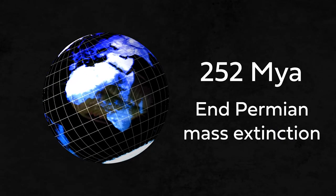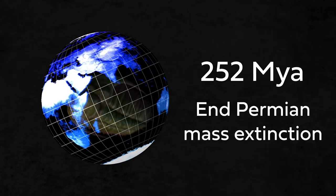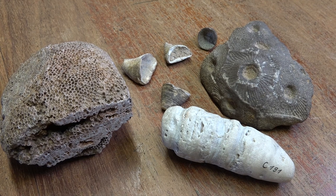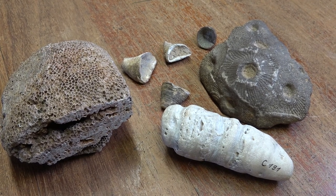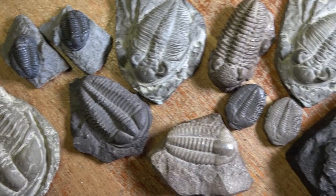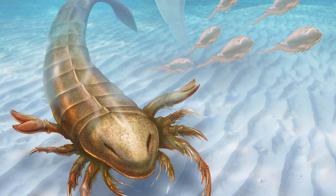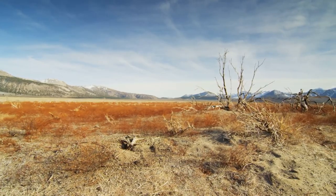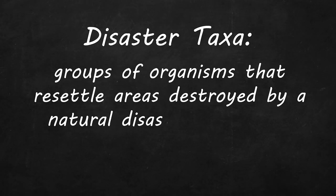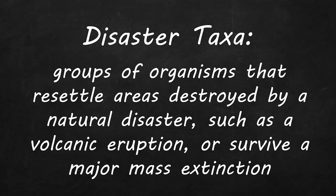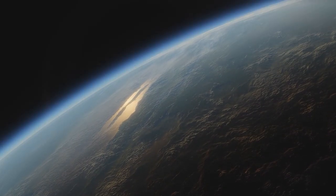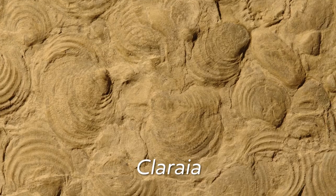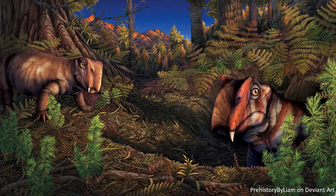Going back to the Permian-Triassic mass extinction, there were many casualties and whole groups of animals went extinct. Most notably, horn corals and tabulate corals — the main reef builders of the Paleozoic era — disappeared for good. Other well-known victims that never came back were trilobites and sea scorpions. After the mother of all mass extinctions, some opportunistic disaster taxa took over — surviving species with a very broad ecological niche, which allowed them not only to survive but also to spread globally into vacated niches. Two disaster taxa were Claraia, a scallop-like clam in the oceans, and Lystrosaurus, a cumbersome mammal-like reptile on land.